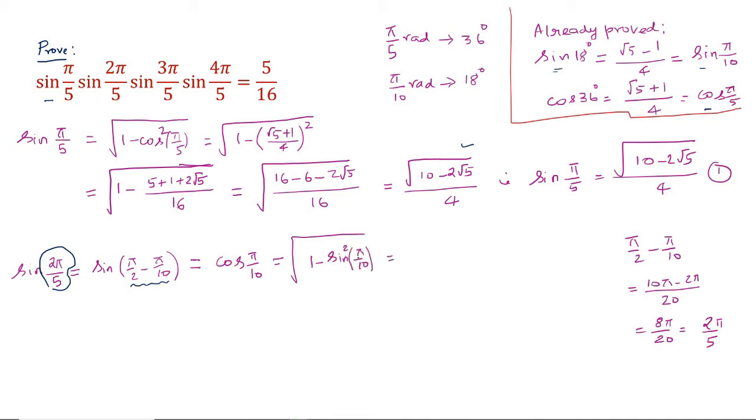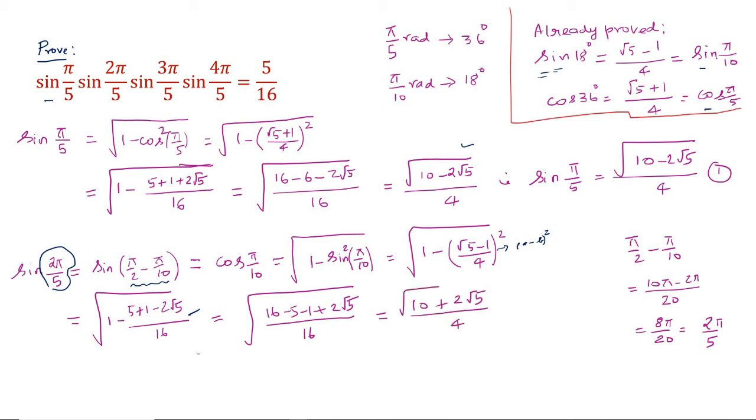So cos(π/10) is nothing but √(1 - sin²(π/10)). Sin²(π/10) is sin²(18°). We have already got it. So substitute, simplify using (a-b)² formula. You got this: 5 - 2√5 + 1. This 16, when you take outside the square root symbol, it will become 4.